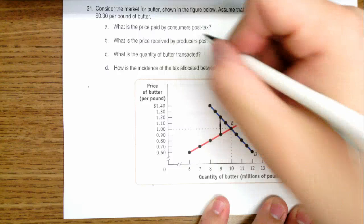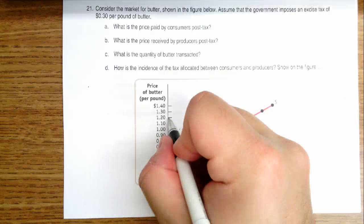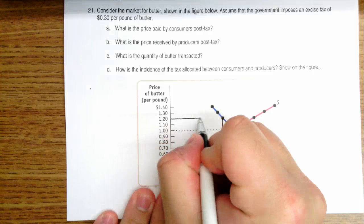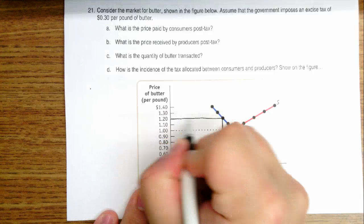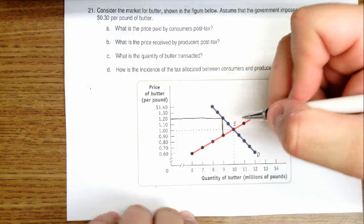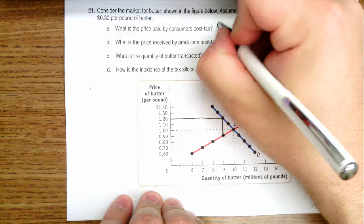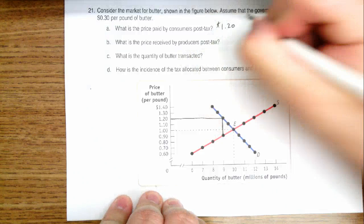So what is the price paid? The price paid by consumers would be $1.20 because that's the price that corresponds to this portion on the demand curve. So the price paid by consumers is $1.20.